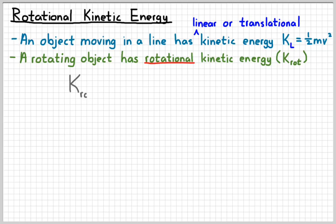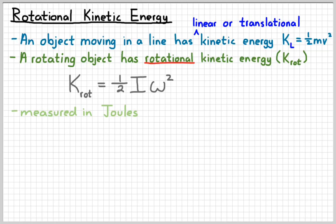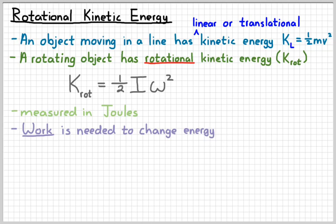The rotational kinetic energy equation is simply one-half, and instead of mass we put the moment of inertia I, and instead of velocity we put omega, the angular velocity, squared. The cool thing about rotational kinetic energy is it's measured in the same unit as linear kinetic energy — joules — which makes it really useful for comparing the two. And just like always, work is needed to change the energy of something, so now we just have another form of energy to account for.